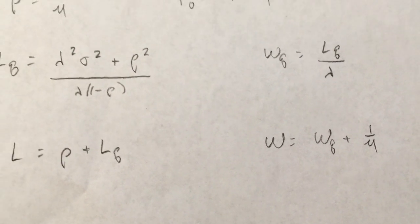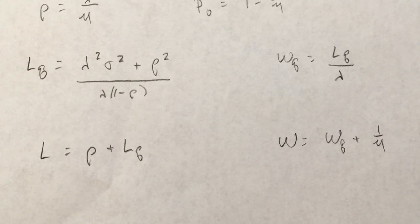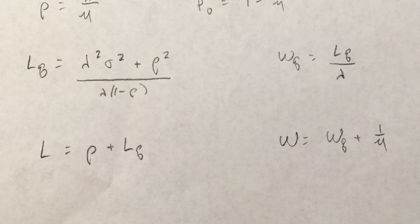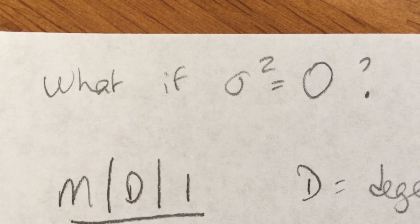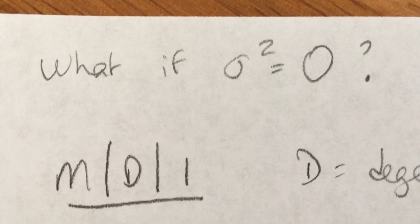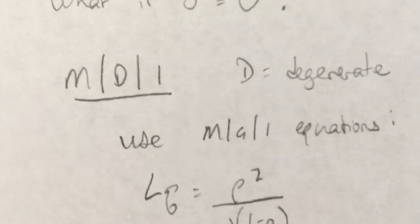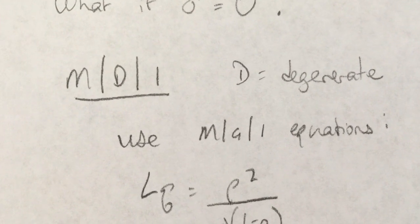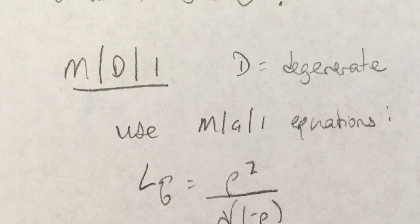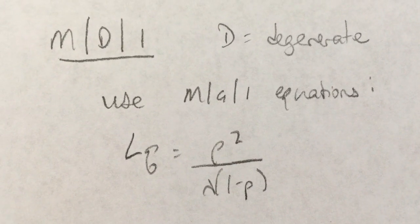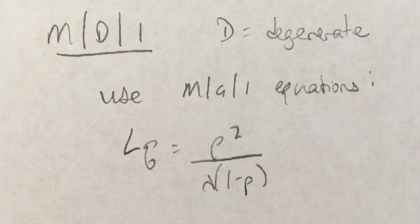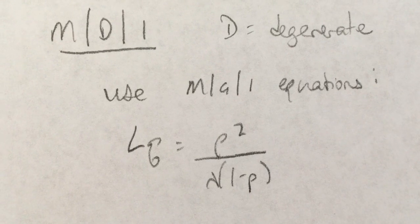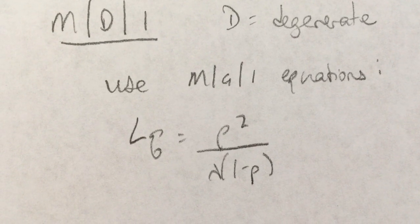Now what if your variance is zero? What does that mean? Well, now we have an M/D/1, D being degenerate. It just means that the service times are constant. So we can still use the M/G/1 equations because it's just a special case, but sigma, the standard deviation, sigma squared is zero. So L_Q is just this, which is the same as L_Q for an M/G/1 but without the variance term.